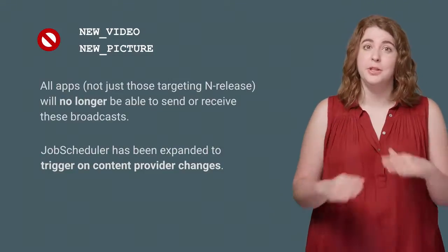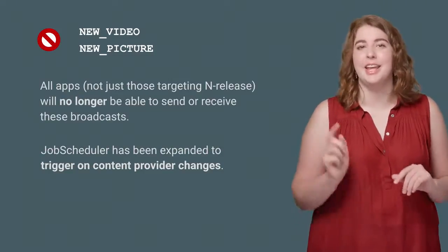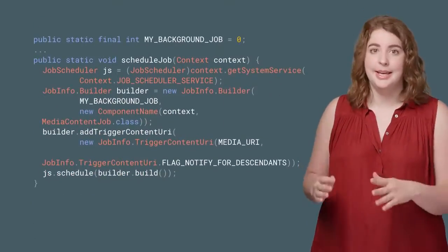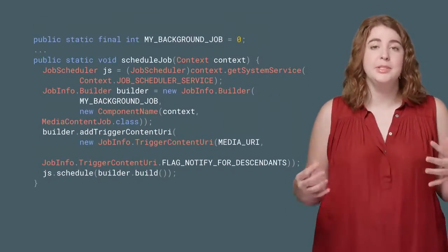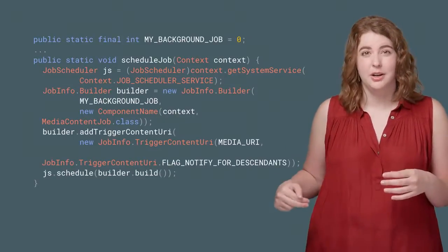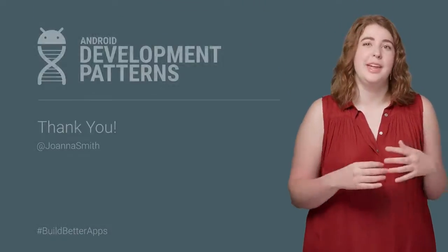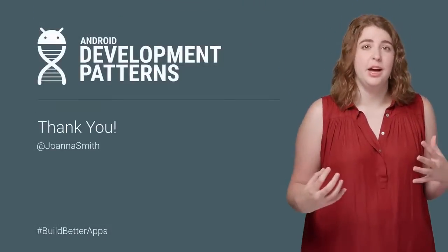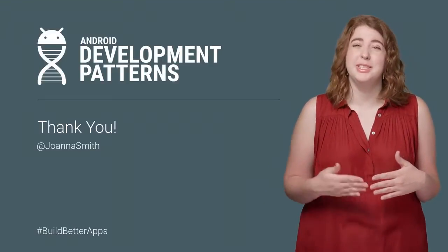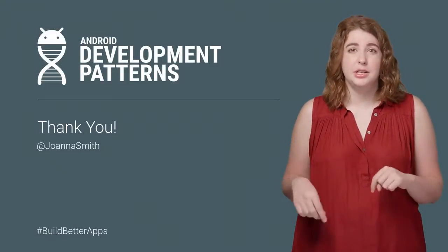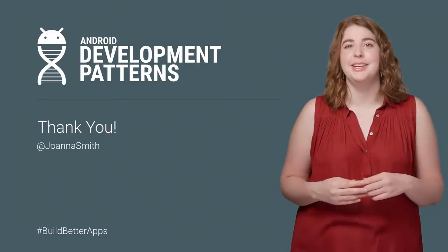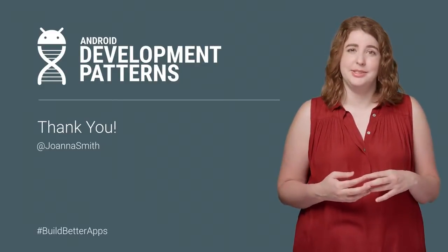Both broadcasts have been fully deprecated in API 24. The alternative here is to again use JobScheduler, which has been updated to consider content provider changes as a trigger. We're trying our best to move to a world that is dynamic, without passive receivers claiming processor time for work that should be done in a better way. Check out the docs for code you can copy and paste into your own app and have some fun getting to know JobScheduler's updated options.